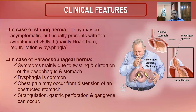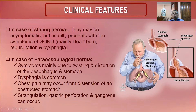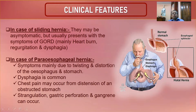Clinical features: sliding hernia may be asymptomatic but commonly presents with GORD symptoms — heartburn, regurgitation, and dysphagia. Para-esophageal hernia causes more symptoms due to twisting and distortion of the esophagus and stomach. Dysphagia and chest pain from distension of the obstructed stomach occur. Serious complications include strangulation, gastric perforation, and gangrene due to ischemia from the narrow hiatal opening.